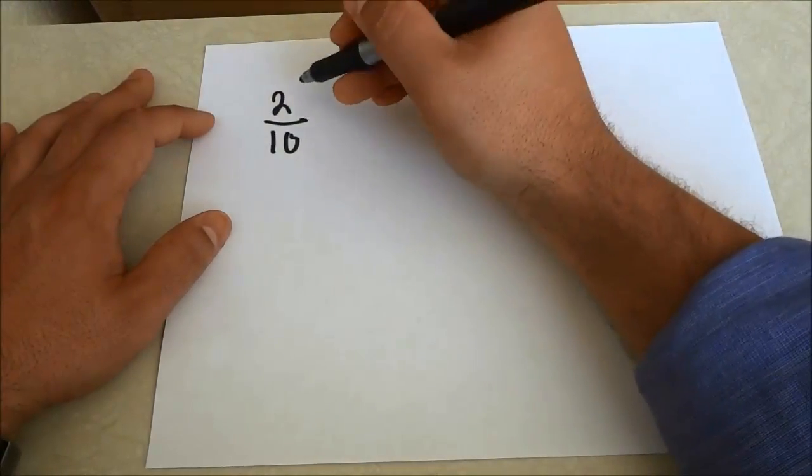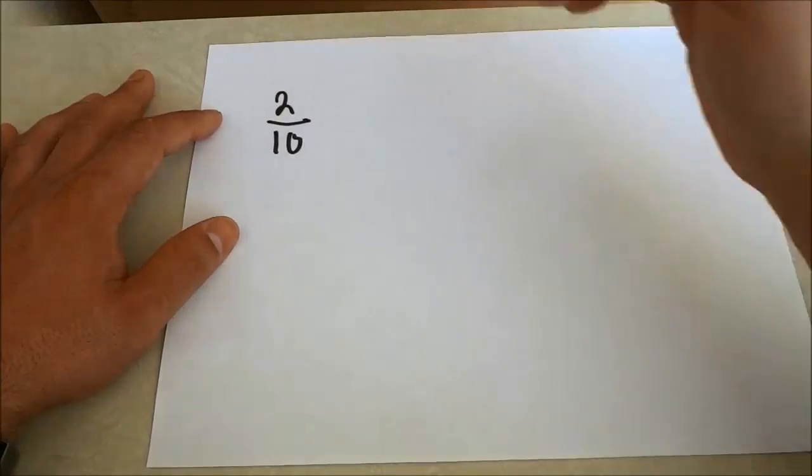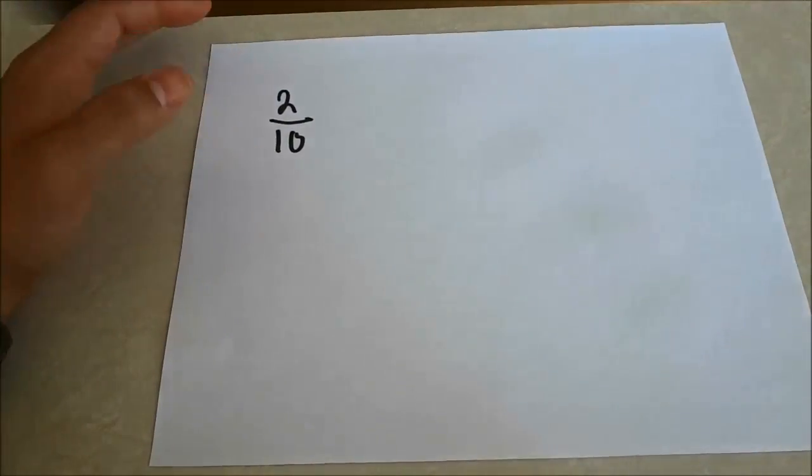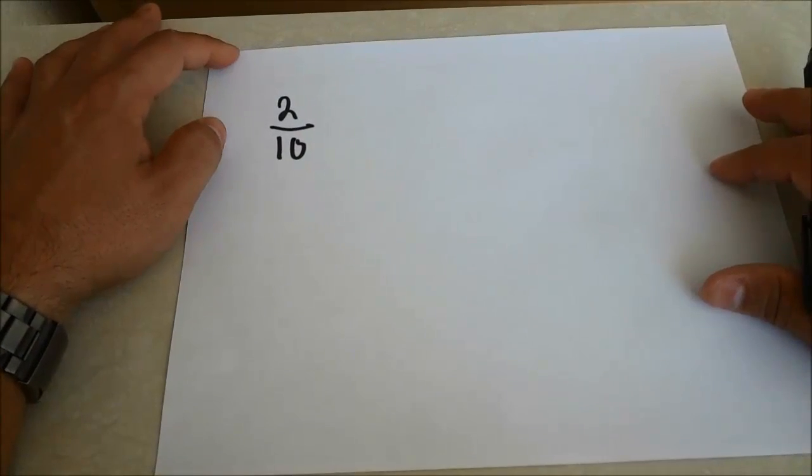So in order to reduce it to its lowest terms, we have to take the fraction, the numbers, and we have to divide them by their greatest common factor.